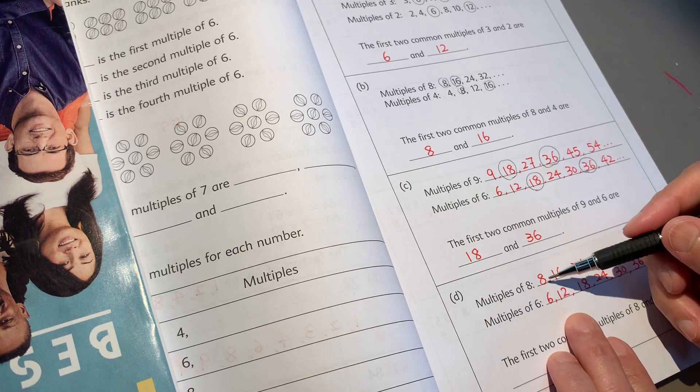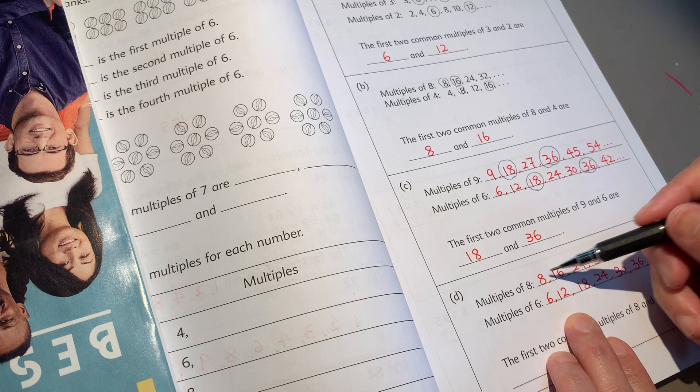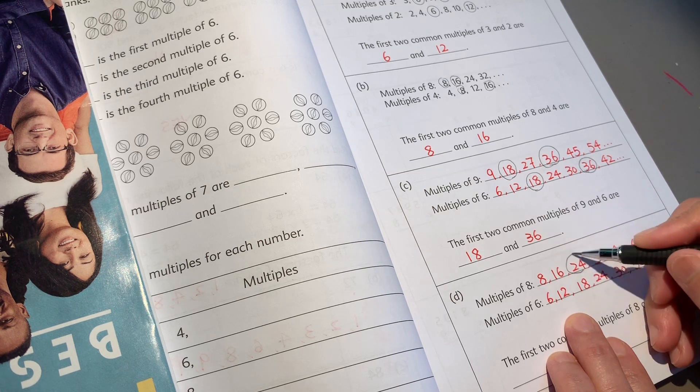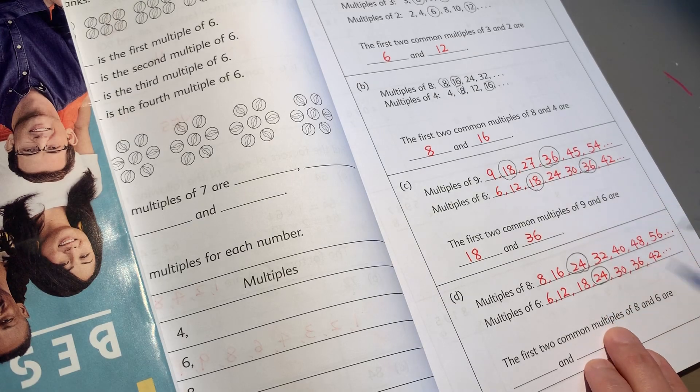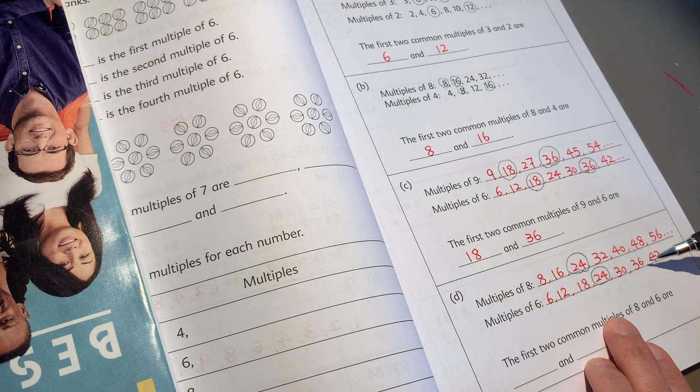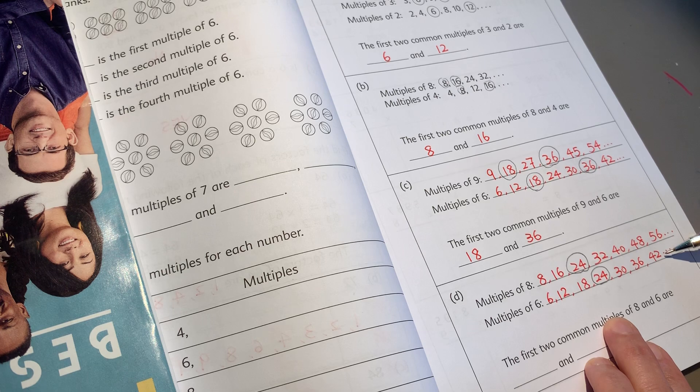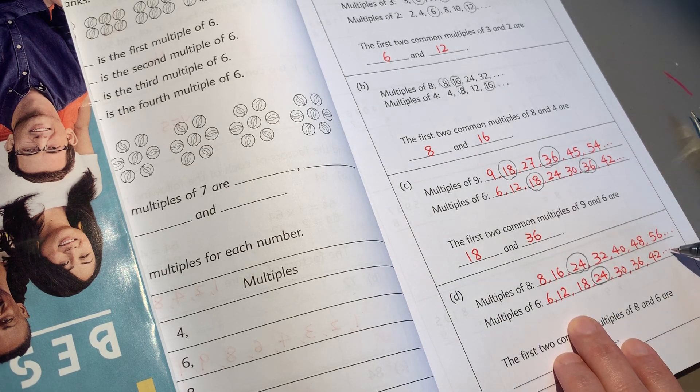Multiple of 8, 8, 16, 24, 24. And then, oh, oh, we have to write more. We have to write more. We have to write more. 6, 28, 48.